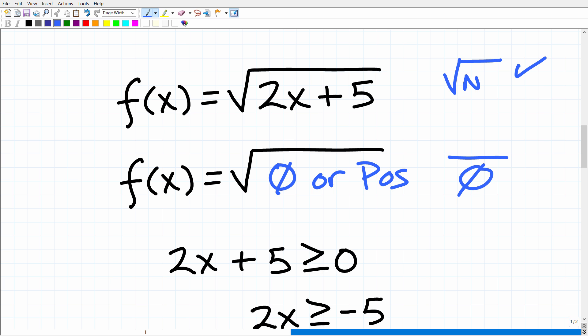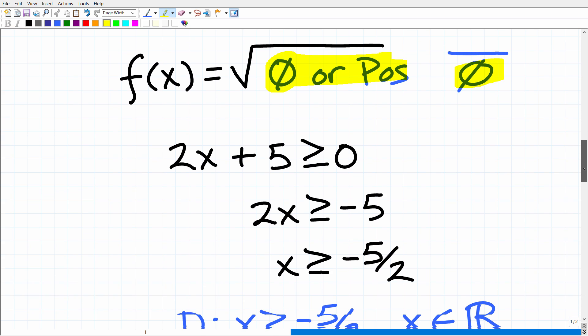And when you have a function that has a square root, you can never have a situation that allows a negative underneath that square root. So basically, when it comes to this function, we don't have a fraction. So we don't have to concern ourselves with a zero in the denominator. But 2x plus 5, this right here can never be negative.